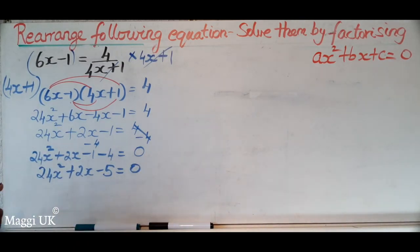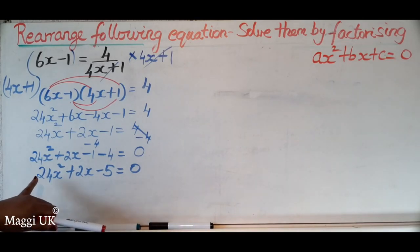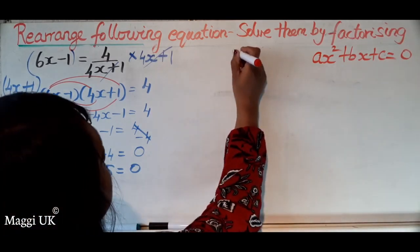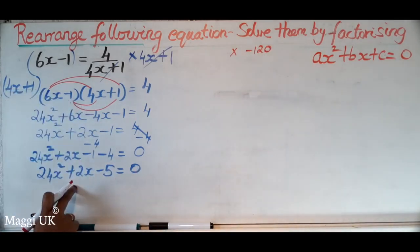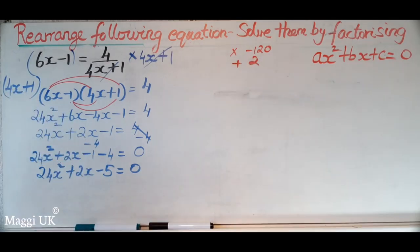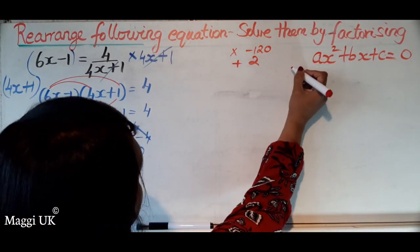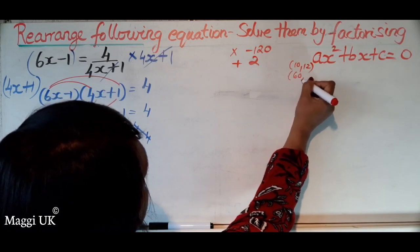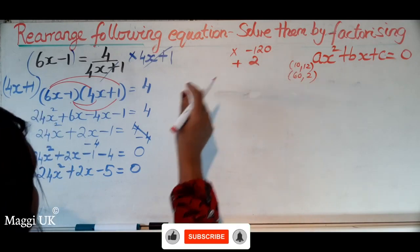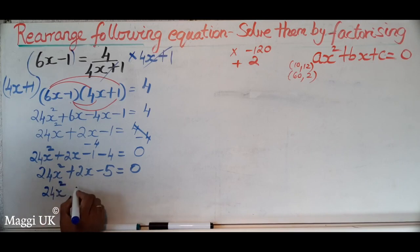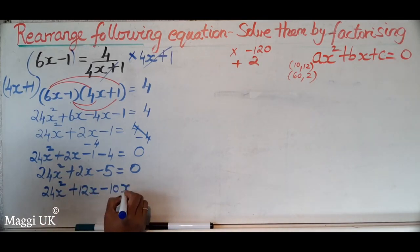Now we factorize when there is a coefficient in the x squared term — go and watch my previous video for this. We need multiples of 24 times minus 5, which is minus 120, that also add to positive 2. The multiples we use are plus 12 and minus 10. So we rewrite as 24x squared plus 12x minus 10x minus 5 equals 0.